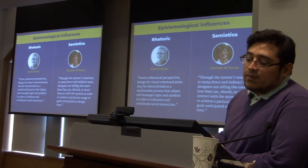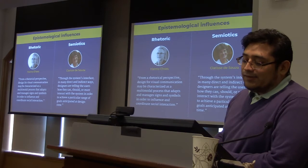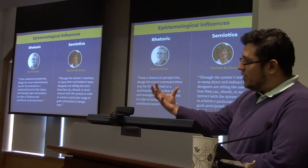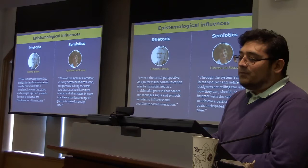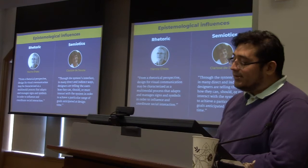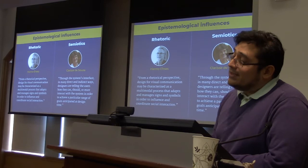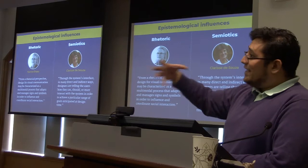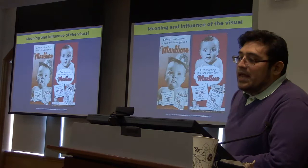For example, Hanno says from a rhetorical perspective: design for visual communication may be characterized as a multimodal process that adapts and manages signs and symbols in order to influence and coordinate social interaction. That's the gist — graphic design is addressing a situation for a certain audience. And in semiotic engineering, Clarice D'Souza says: through the system's interface, designers are telling the users how they can, should, or must interact with the system to achieve a particular range of goals anticipated at design time. So we as designers are creating messages we convey through interaction. If the user cannot accomplish a goal, our message is not clear enough.